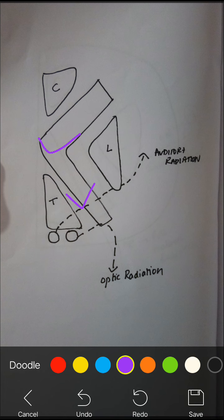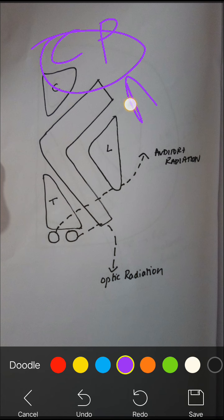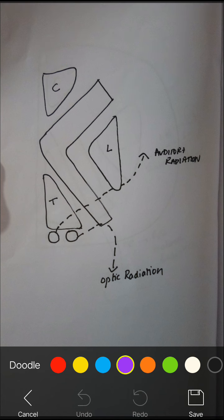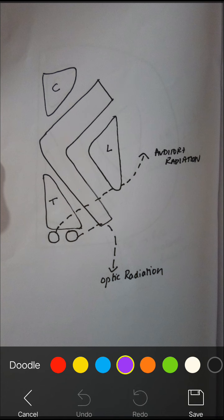What's left is the anterior limb. In the anterior limb, remember two things: one is corticopontine fibers, and the other is anterior thalamic radiation. Note that corticopontine fibers mainly pass through the anterior limb, but some also pass through the posterior limb. The sensory tracts are usually mentioned in the form of thalamic radiations.